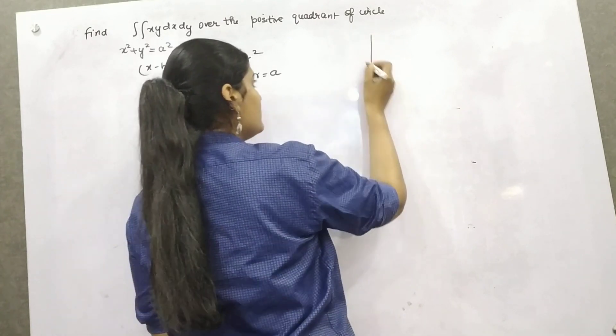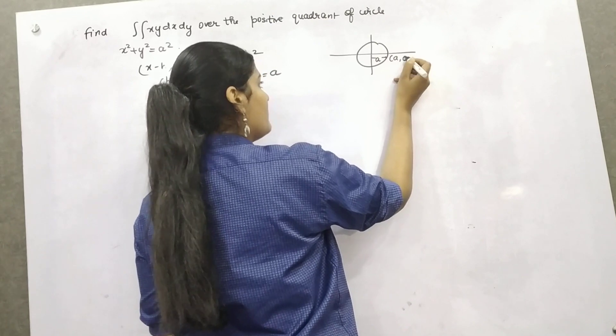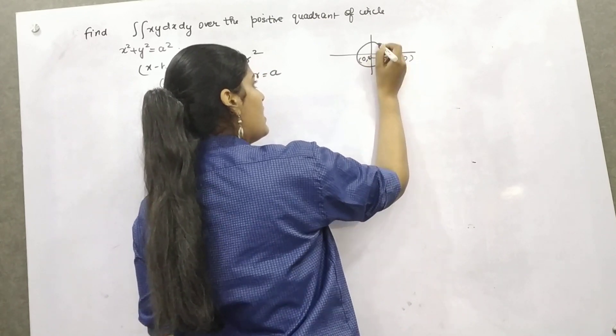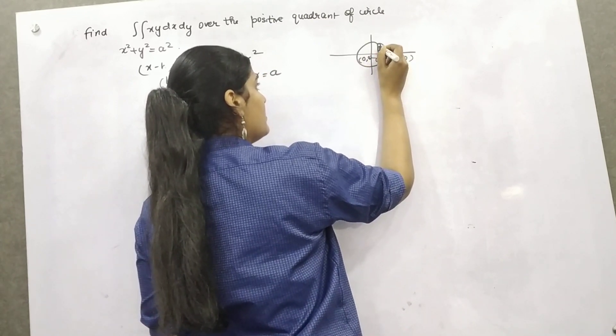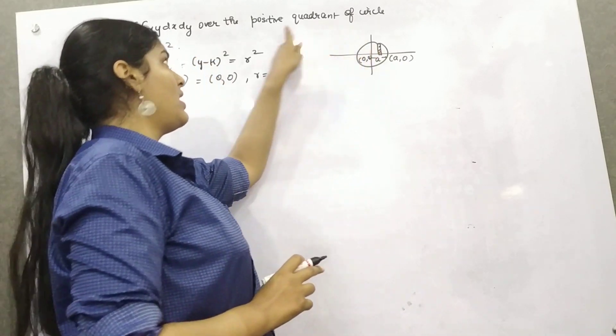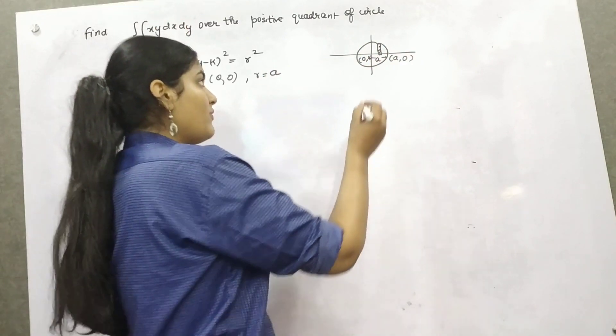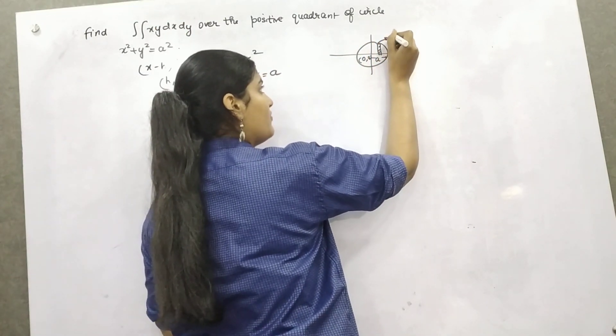So if you make a circle of radius a, so this will be the coordinate (a,0), this is (0,0) and you want to find out the region in the first quadrant. Why first quadrant? Because this is the positive quadrant of a circle.